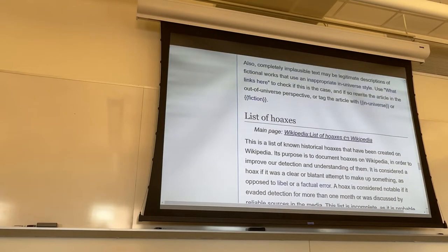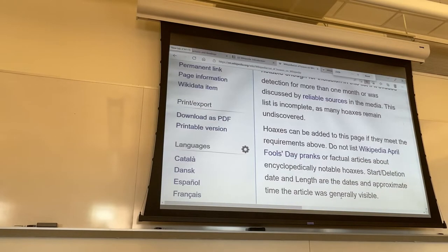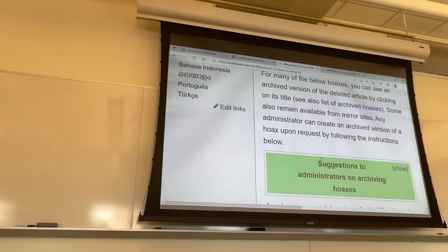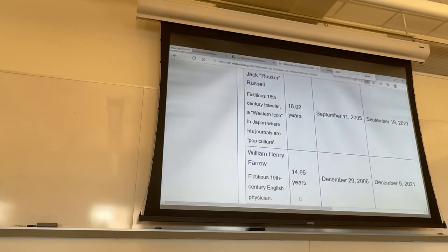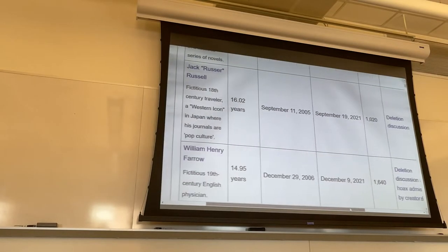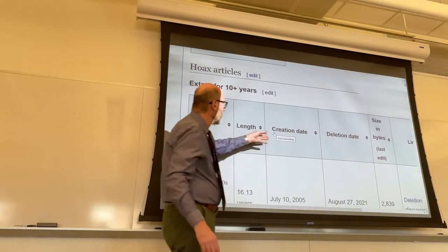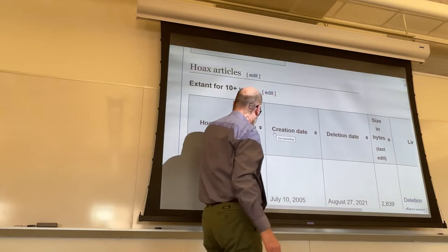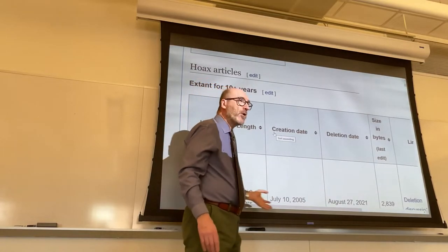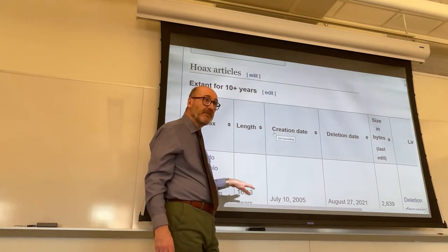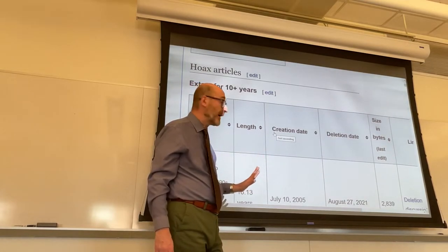Let me go back to the list of hoaxes. This is the table of hoaxes, which can be organized based on any one of these headings. The most interesting aspect is the length column, which shows you for how long a fake entry or some fake information within a valid article went undetected before it was identified and corrected.